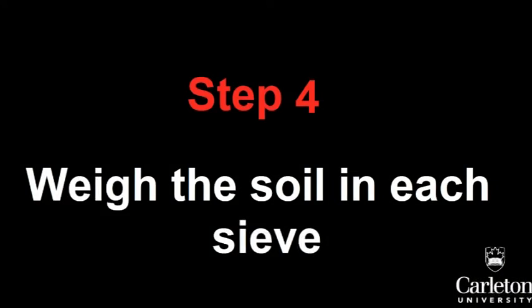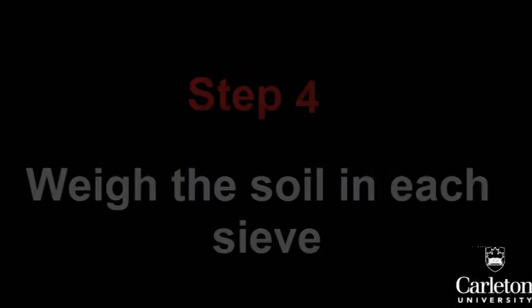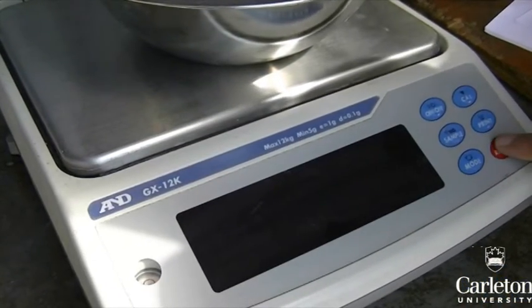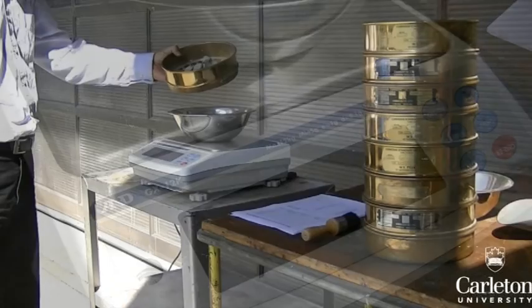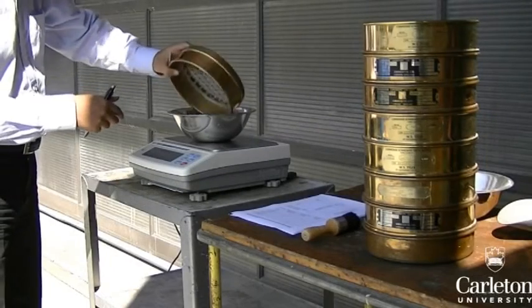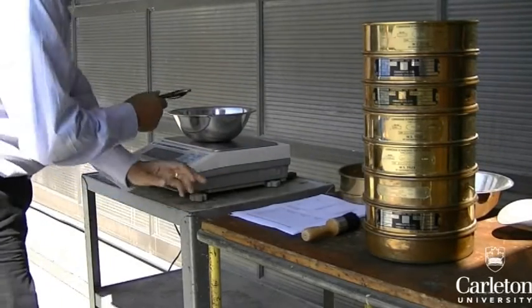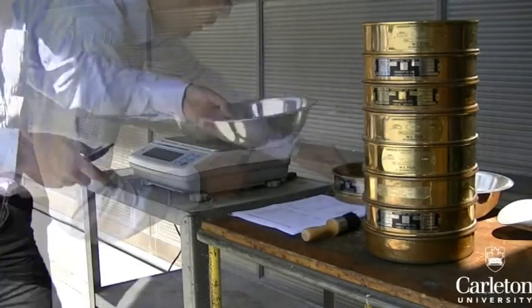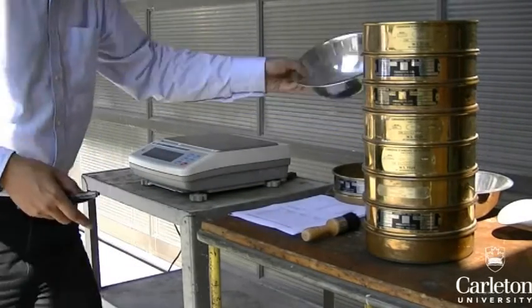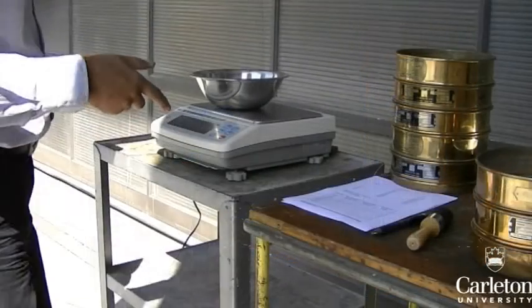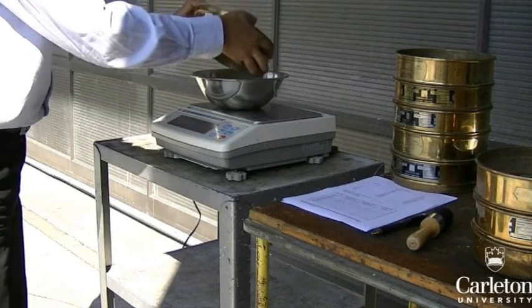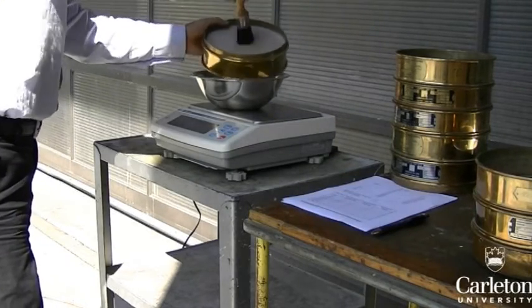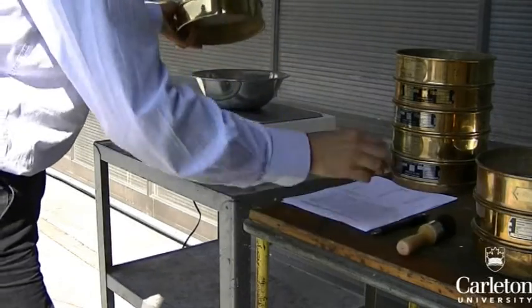Next, you will need to take the soil in each sieve and weigh it on the scale. To do this, we will use this container. Place your container on the scale and zero the scale. Pour the contents of the first sieve into the bowl, record the mass of the material according to the size of the sieve, and then pour the contents of the bowl into another container for storage. With the finer grain sizes, use the brush on the back of the sieve to remove as much of the material as possible. Make sure not to spill any of the sample when you do this.